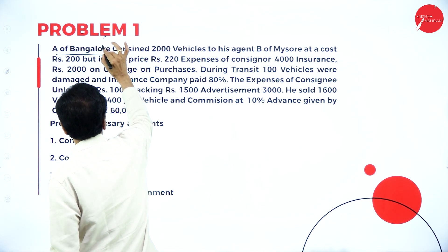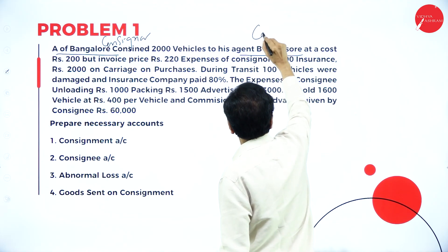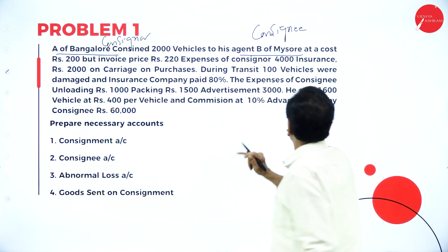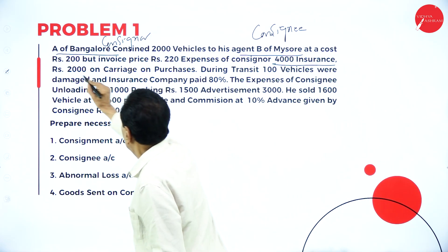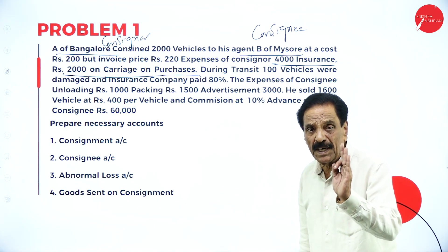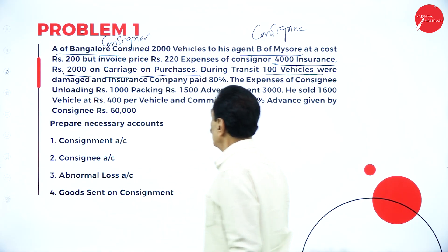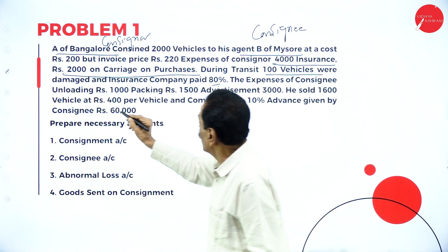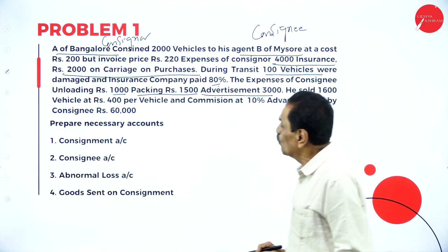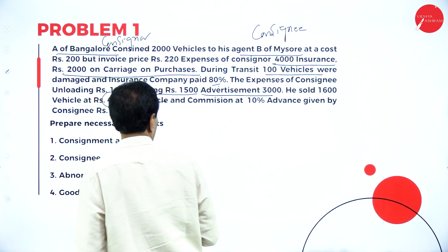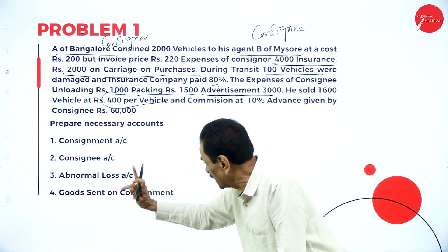Now we move to the problem. A of Bangalore, who is the consignor, consigns 2,000 vehicles to his agent B of Mysore, the consignee, at a cost of Rs. 200, but the invoice price is Rs. 220. Expenses of the consignor: insurance 4,000 and carriage 2,000, totalling 6,000 — these are recurring expenses. During transit, 100 vehicles were damaged and the insurance company paid 80%. Expenses of the consignee: unloading 1,000, packing 1,500, and advertisement charges. He sold 1,600 vehicles at Rs. 400 per vehicle with commission at 10%. Advance given by consignee is Rs. 60,000. Prepare: consignment account, consignee account, and abnormal loss account.